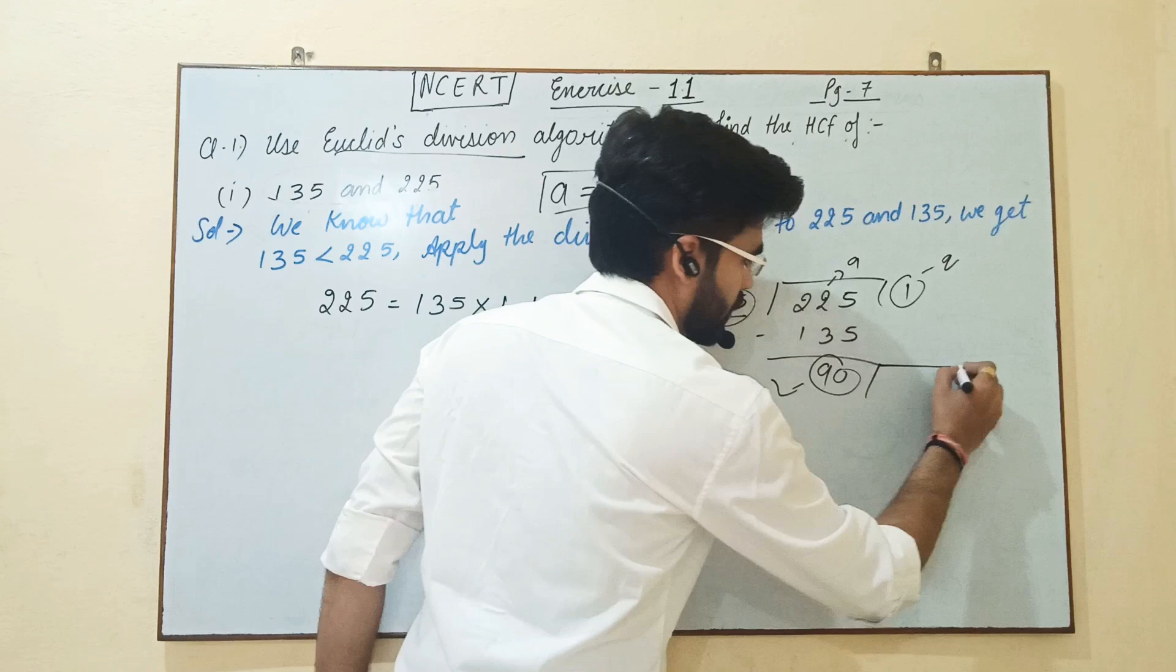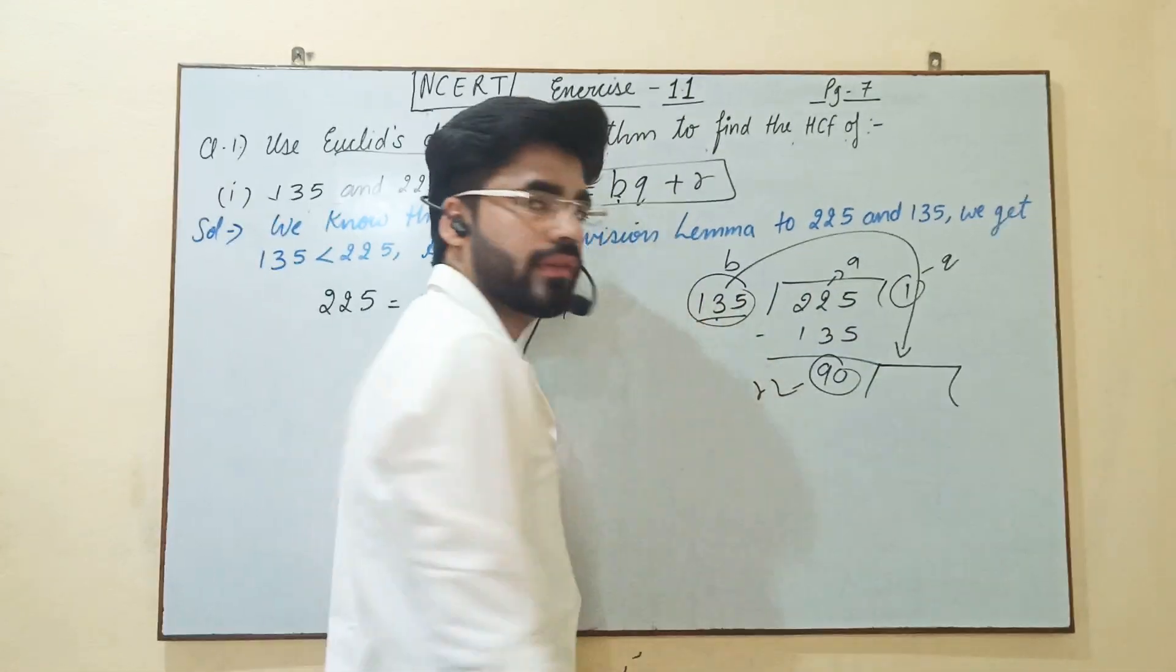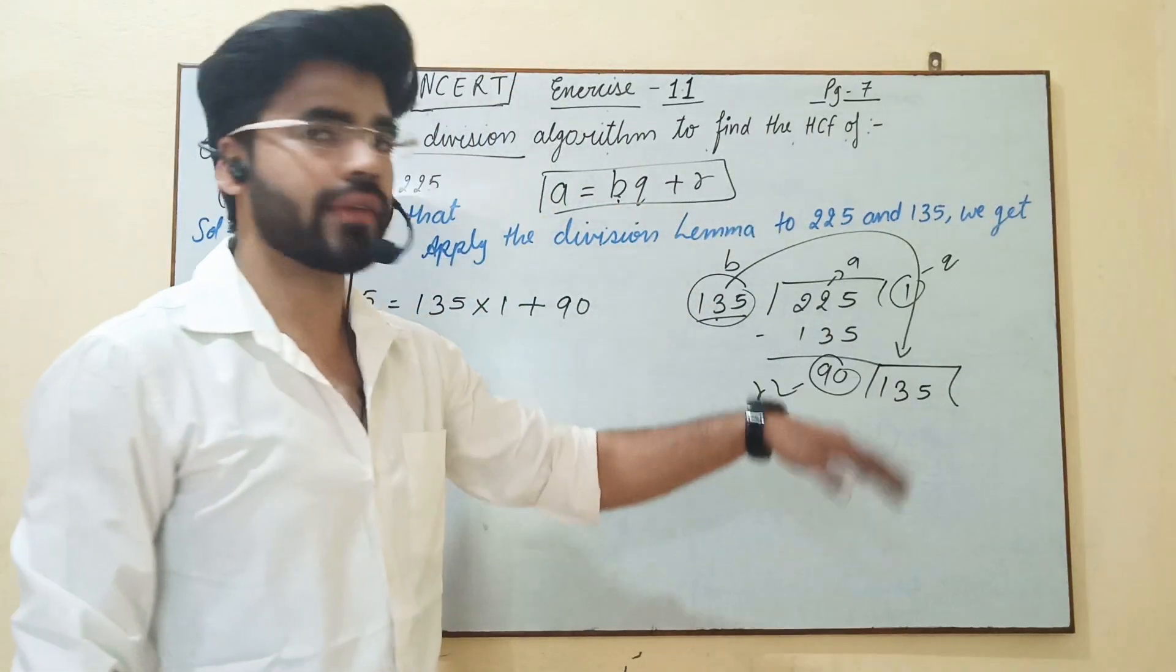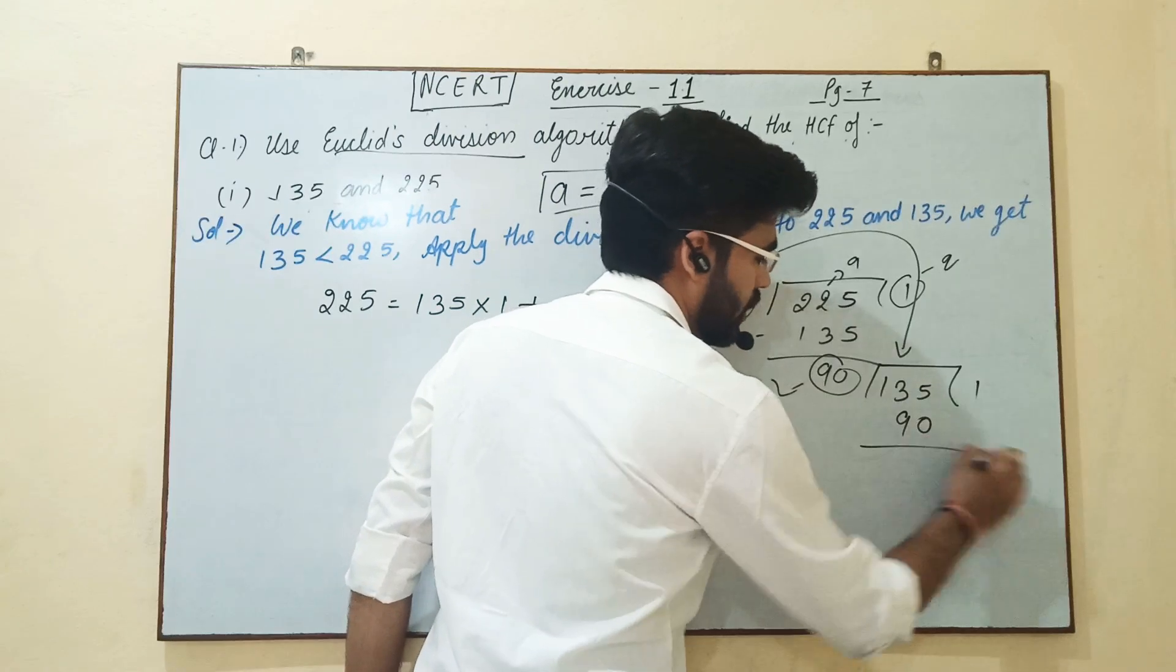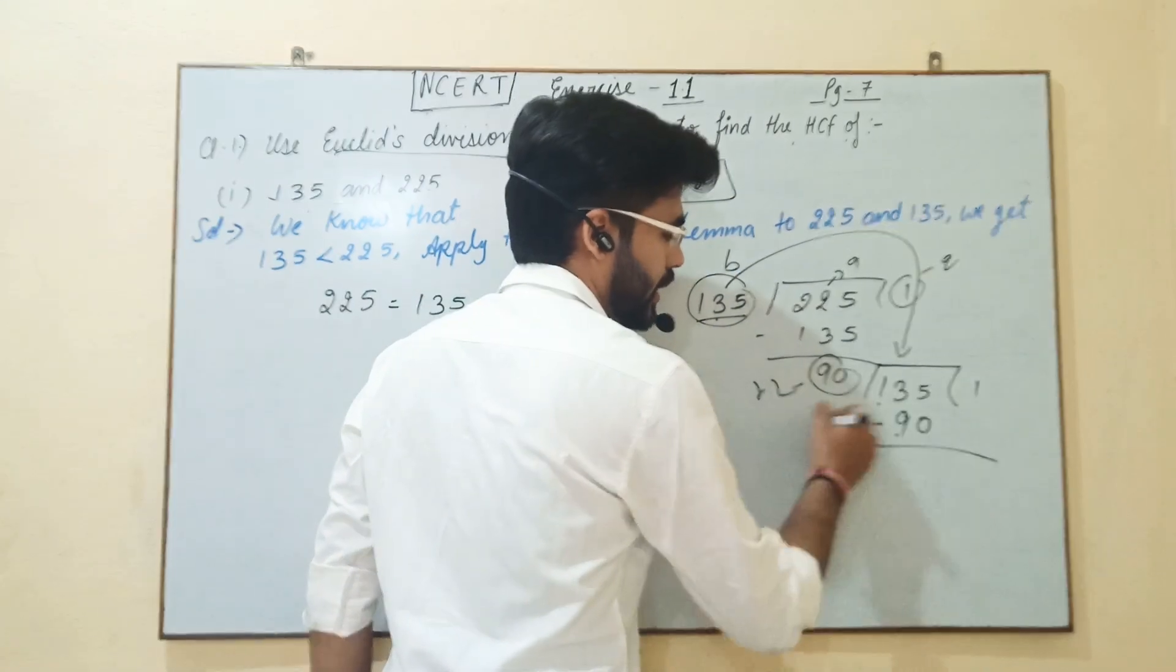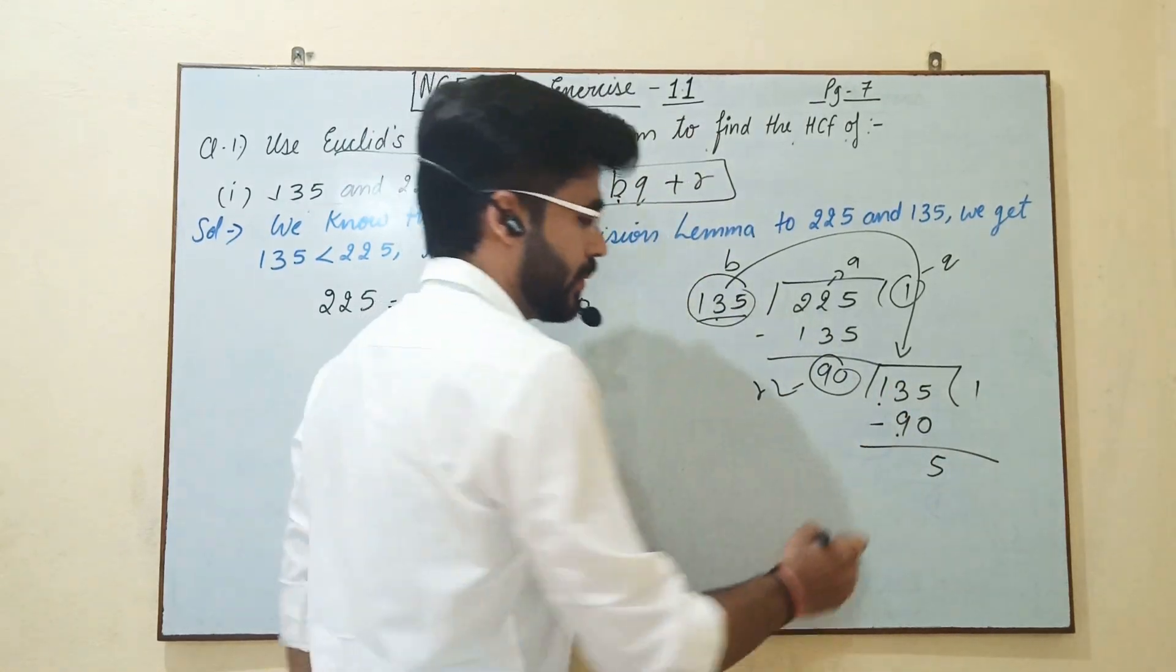Let's further process. We have to put this divisor into the dividend, 135. Now then again we have to divide. 90 to 135 - we have to subtract from 135 subtract 90, we get the result is 45.